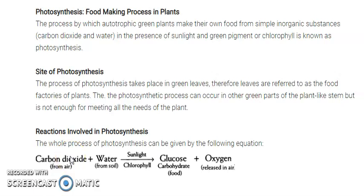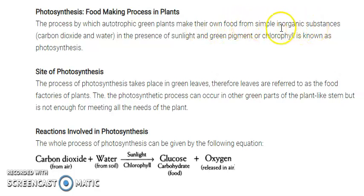Hello everyone, good morning students. In the last video we discussed chapter number one, Nutrition in Plants, in which we discussed about cells and different types of nutrition. Today we are moving further to the process of photosynthesis. Photosynthesis is a process by which plants make their food — it is the food-making process in plants. The process by which autotrophic green plants make their own food from simple inorganic substances — carbon dioxide and water.